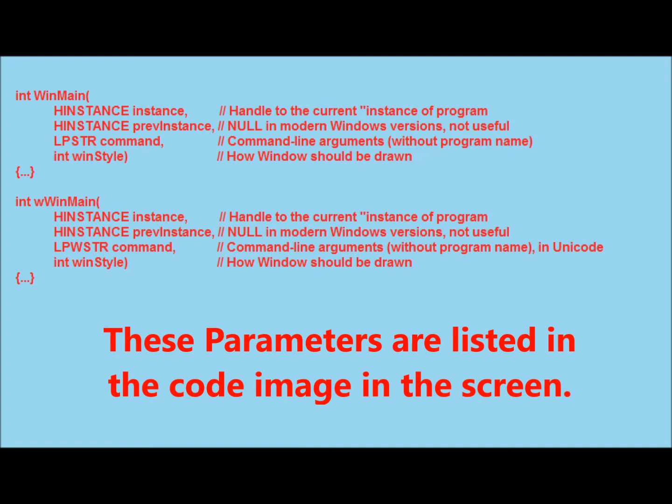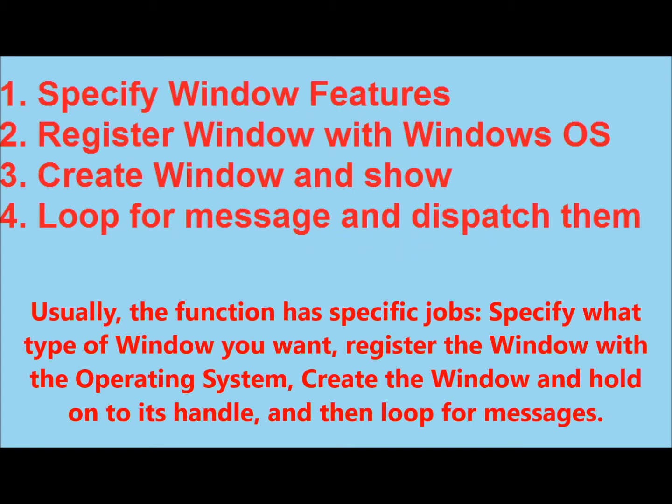These parameters are listed in the code image on the screen. Usually, the function has specific jobs: specify what type of window you want, register the window with the operating system, create the window and hold on to its handle, and then loop for messages.